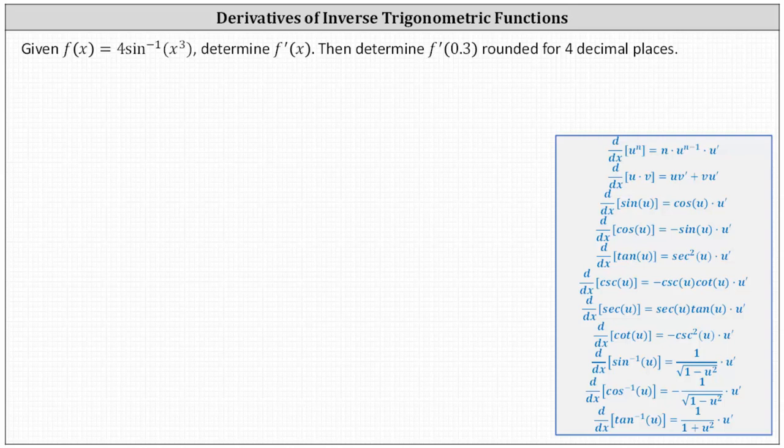The derivative formulas on the right include the chain rule. Notice the derivative of inverse sine u with respect to x is equal to one divided by the square root of the quantity one minus u squared times u prime.